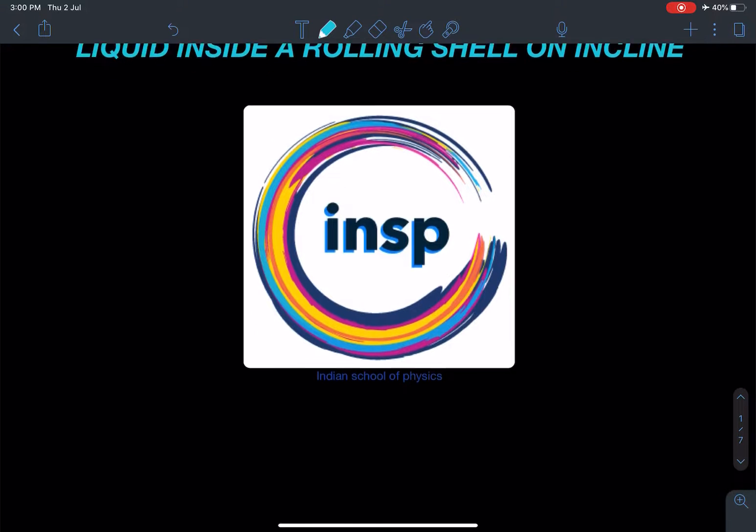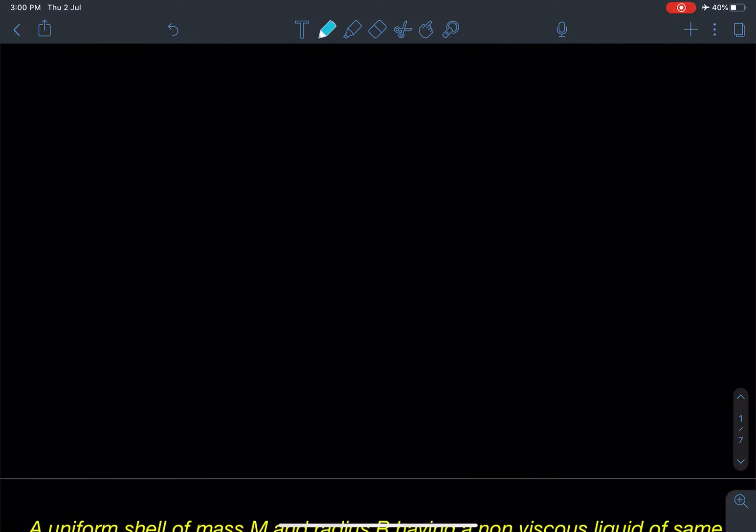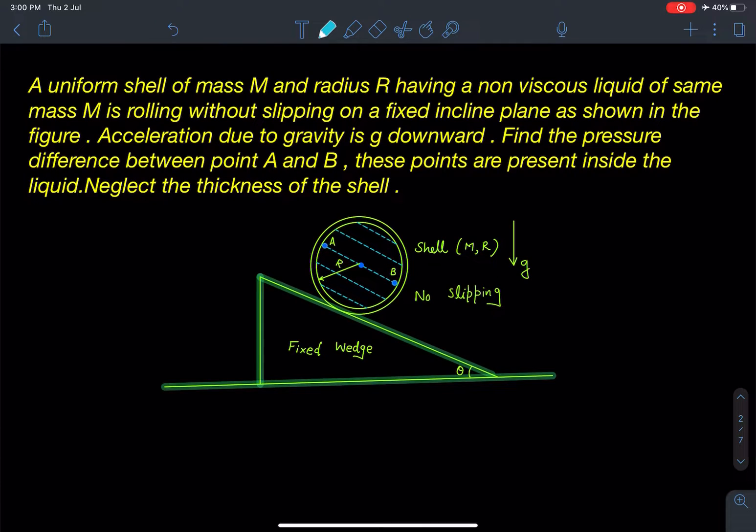As you can see here, it's given a uniform shell of mass M and radius R having a non-viscous liquid of same mass M is rolling without slipping on a fixed inclined plane as shown in the figure.